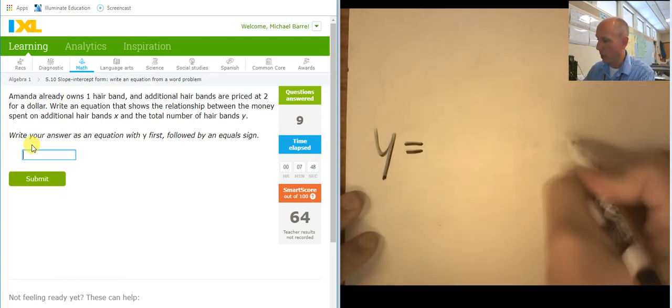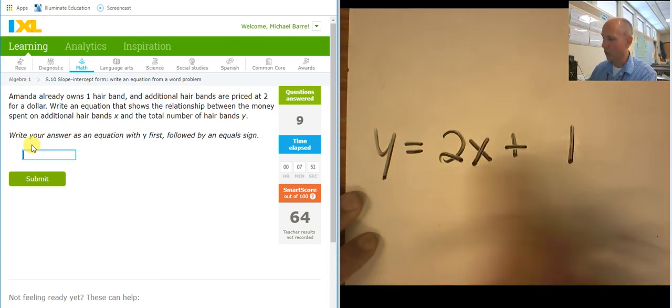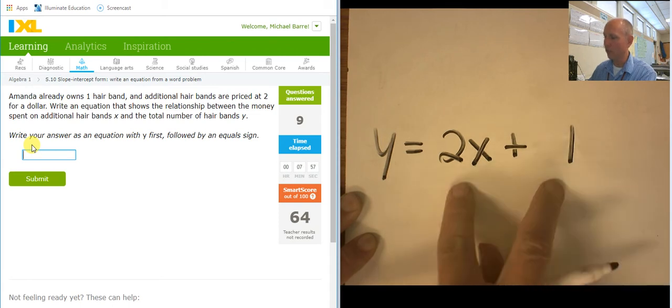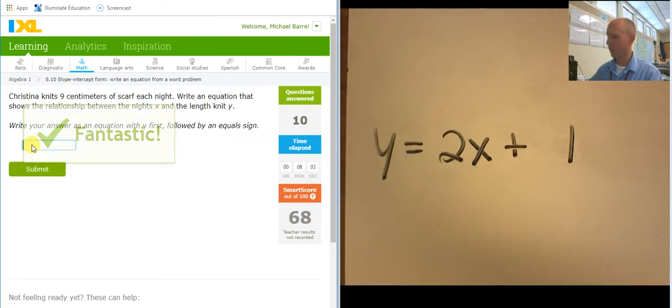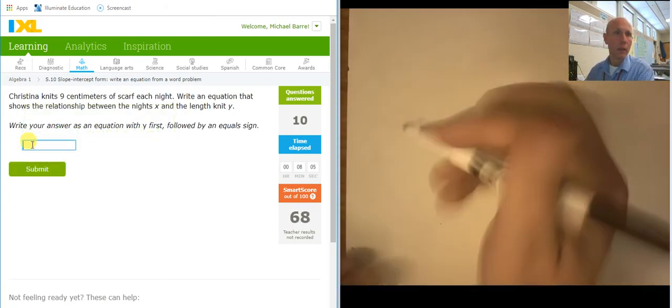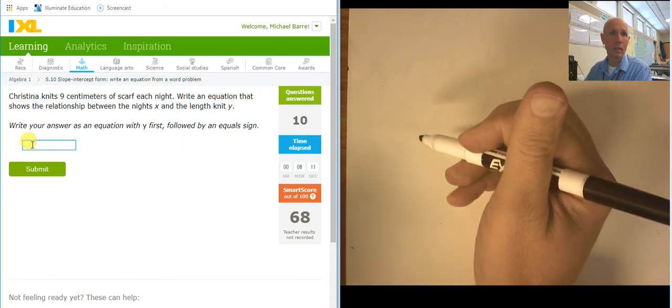And she already owns one hairband, and she's getting two for a dollar. So, y equals, she already owns one and two per dollar. So, zero dollars, she has one. One dollar, she has three. Two dollars, she has five.